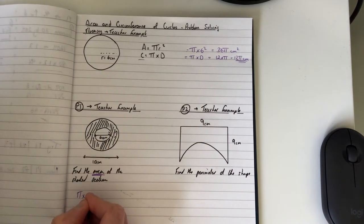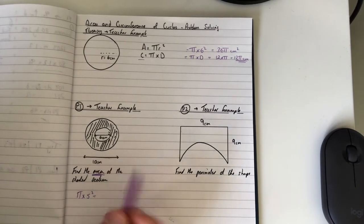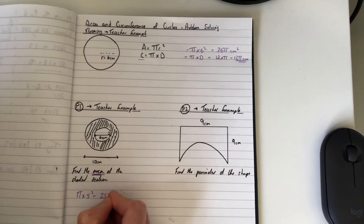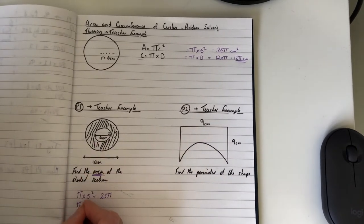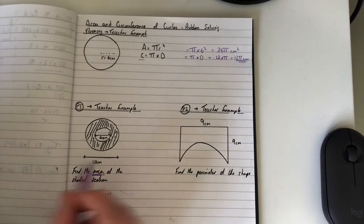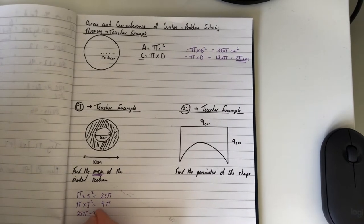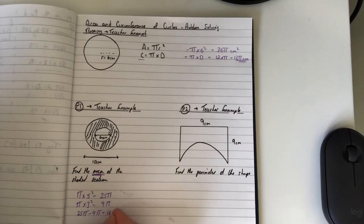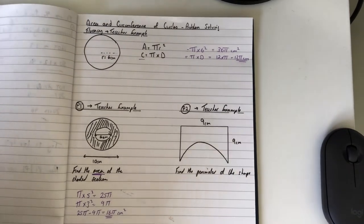So that would be π times 5² because the diameter of that big shape is 10, so that's 25π. Then we take away the smaller circle which is π times 3², which would be 9π. So 25π take away 9π leaves us with 16π centimeters squared.